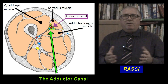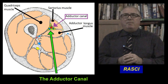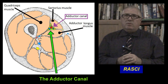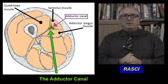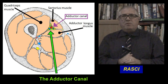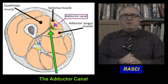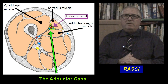The adductor canal is in the thigh, surrounded by muscles on three sides. The muscle forming the canal roof is the sartorius muscle. The canal contains the femoral artery, some veins, and two terminal branches of the femoral nerve. These terminal nerves are the nerve to vastus medialis muscle and the saphenous nerve.